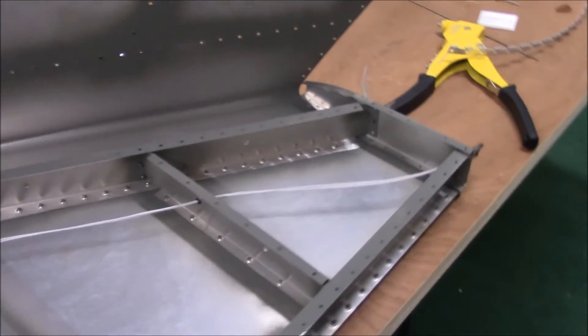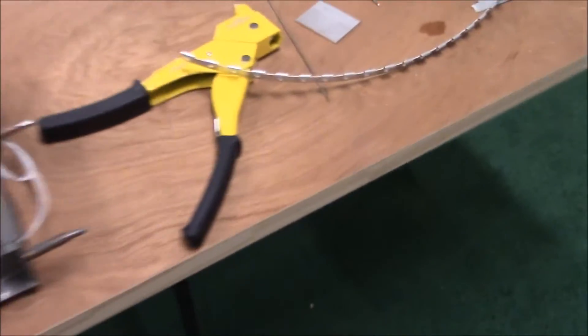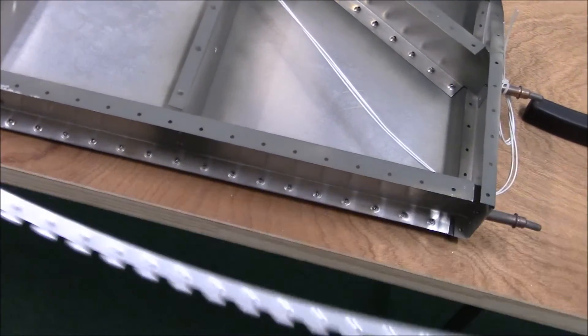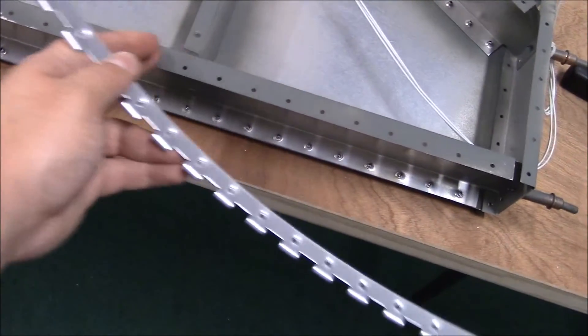And now I'm going to finish getting this hinge ready. It's bending up because of the dimple dyeing I've been doing. I have to dimple dye this piece next. This has already been dimple dyed, and I'll go ahead and rivet it all together. Then this part will be done.